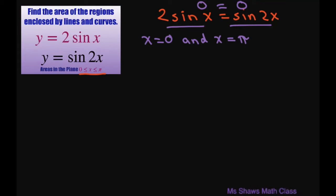So we're going to go from 0 to pi. We're going to take the integral of 2 sine x minus sine 2x dx. And then we just integrate.